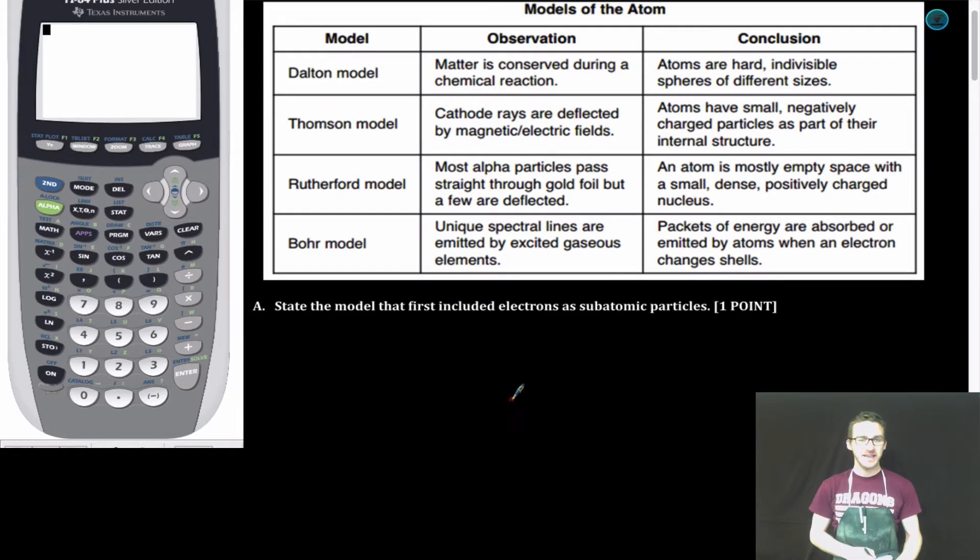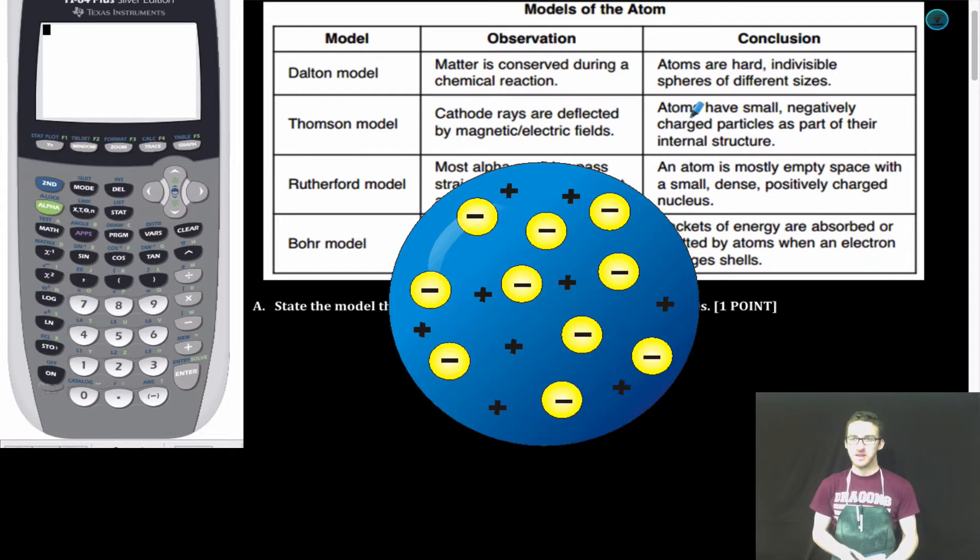Part A. State the model that first included electrons as subatomic particles. As I scan my data table, I notice that in the Thompson model, the conclusion from his experiment indicated that atoms have small,